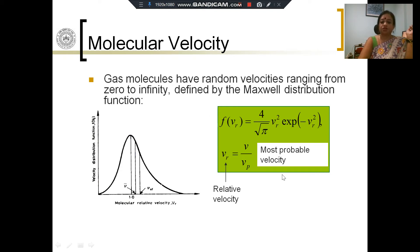This distribution can be given by this relationship: f(vr) = (4/√π) vr² exp(-vr²). So the molecular velocities are distributed according to this particular function.